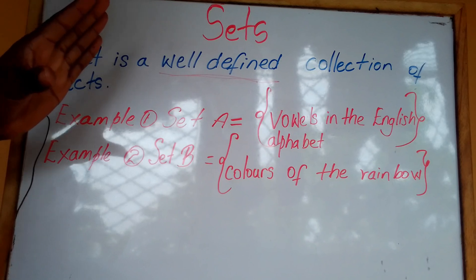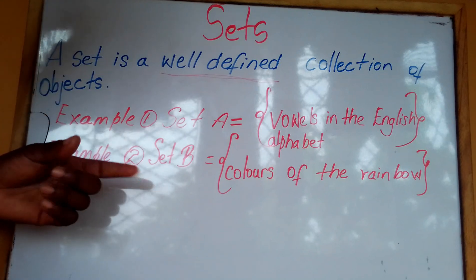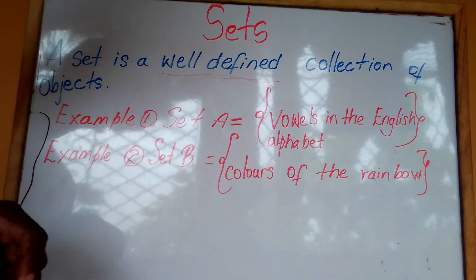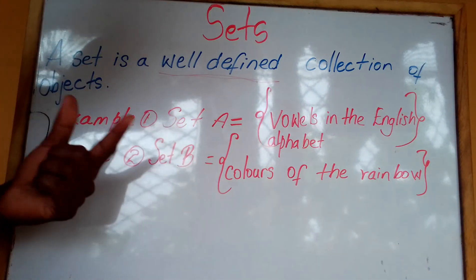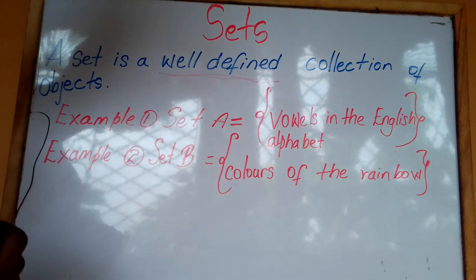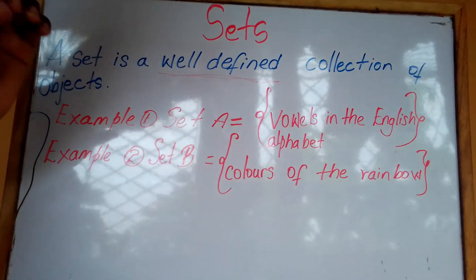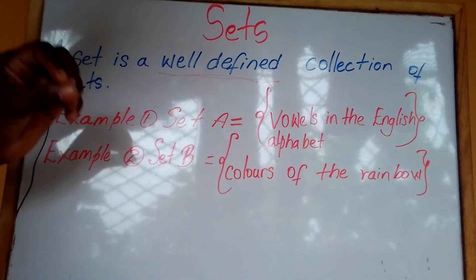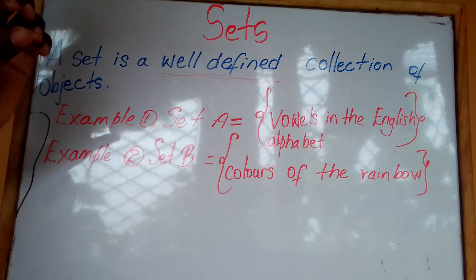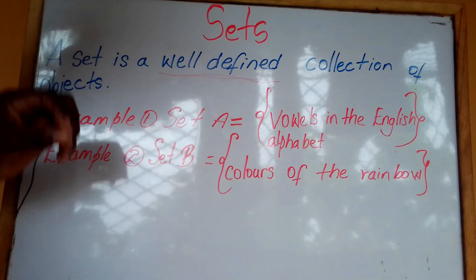Hence it is well-defined. Let us look at example number two. Set B equals the colors of the rainbow. Is this a well-defined set? Yes, it is a well-defined set because we know that there are seven colors of the rainbow, and Set B contains those colors. Therefore those colors would be members or elements of Set B.